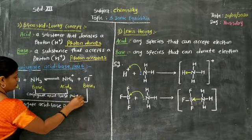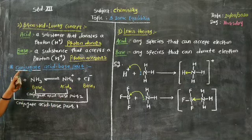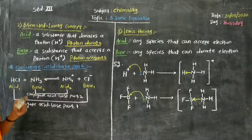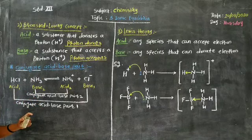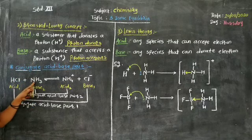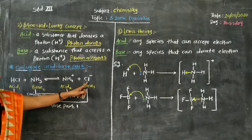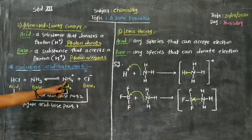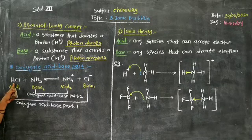For MCQ purposes, questions may be asked such as: out of the following, which one is a conjugate acid-base pair, or which one is not a conjugate acid-base pair? Or a single species is given — for example, write the conjugate acid of NH3, or write the conjugate acid of Cl−, or write the conjugate base of NH4+, or write the conjugate base of HCl.